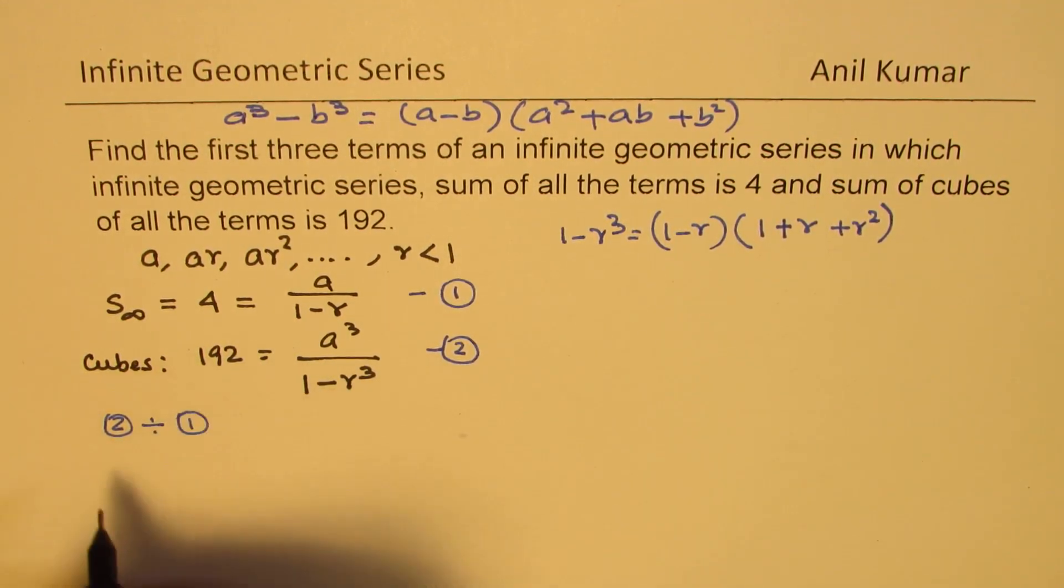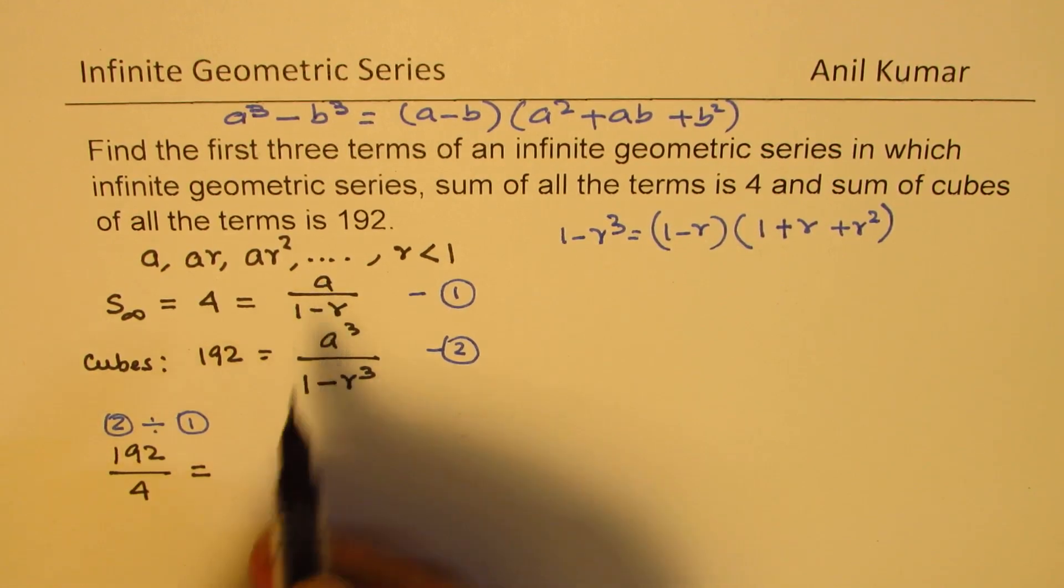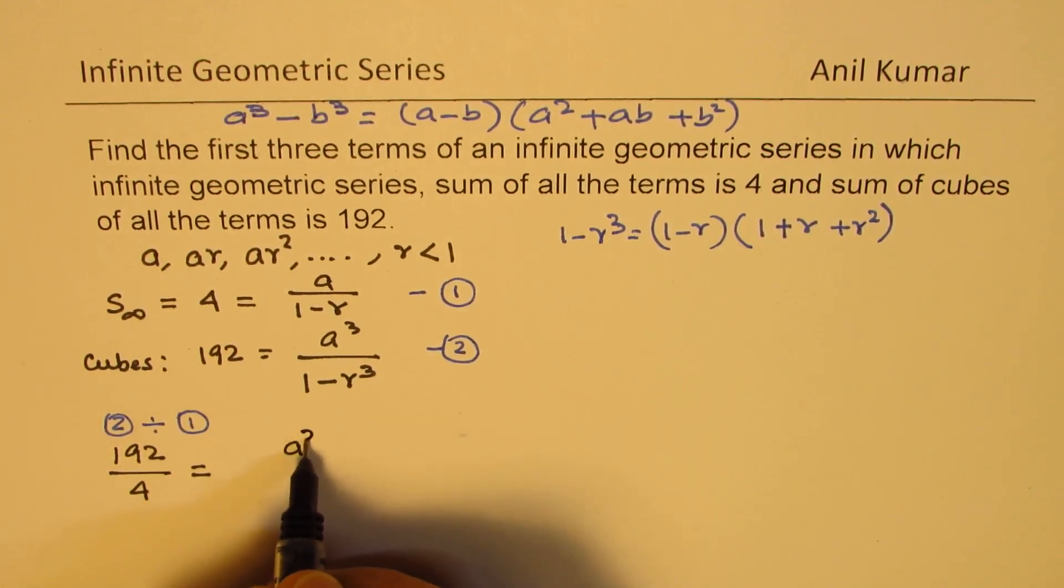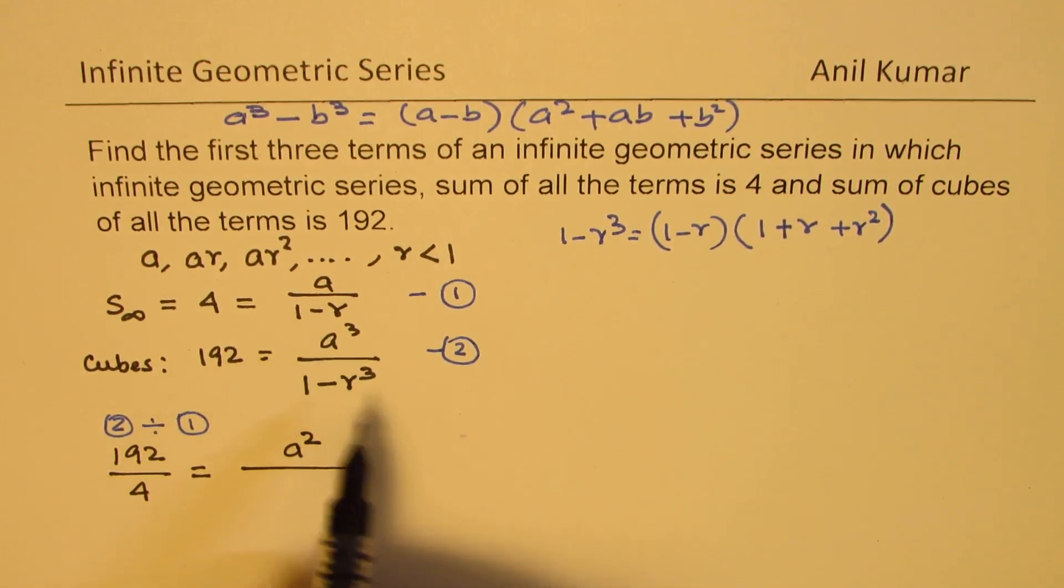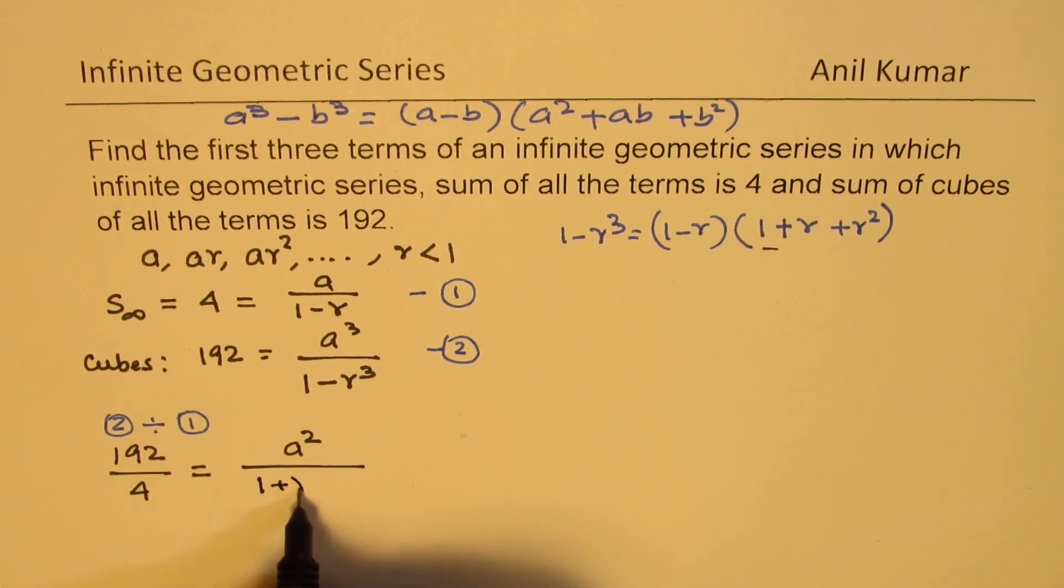We could write this as 192 over 4 is equal to A cube divided by A will give us A square. And in the denominator, 1 minus R will get cancelled and you get this term, which is 1 plus R plus R square.